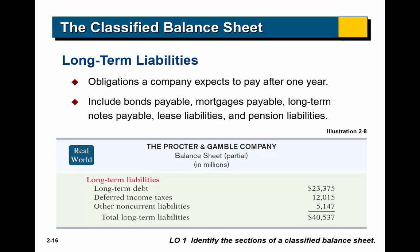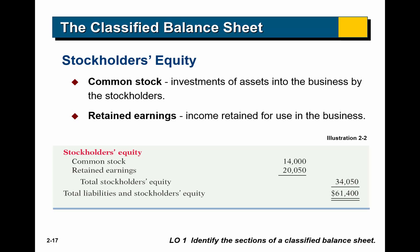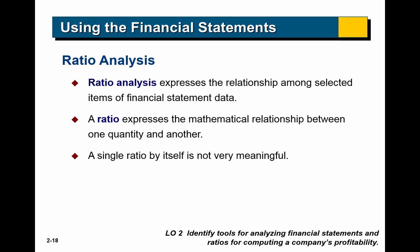Long-term liabilities are obligations we expect to pay more than a year from now — these include bonds payable, mortgages payable, and long-term notes payable. Then there's stockholders' equity, which we learned about last chapter. It includes common stock — investments by stockholders, where we issue them stock and list it on our balance sheet as common stock — and retained earnings, any profits earned by the company and held in the company. So now we know a bit more about what a classified balance sheet is — it's just a balance sheet with more detail.